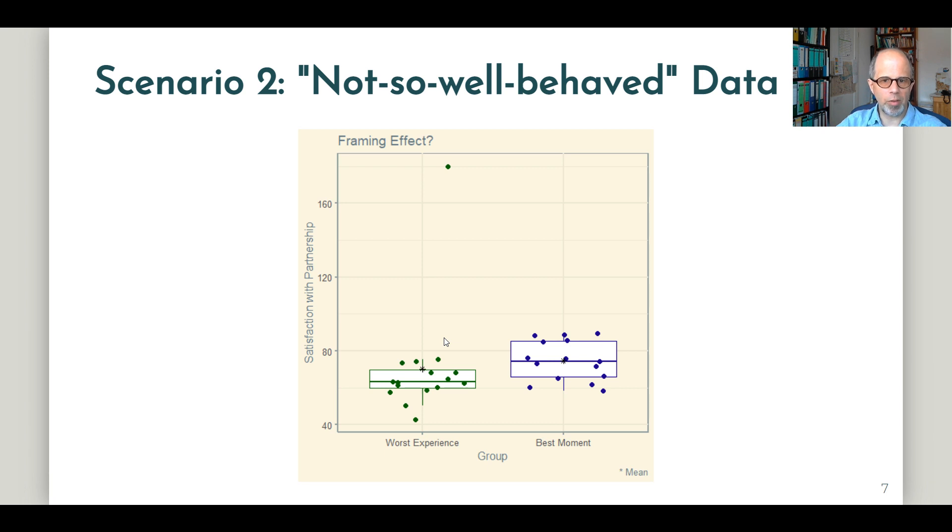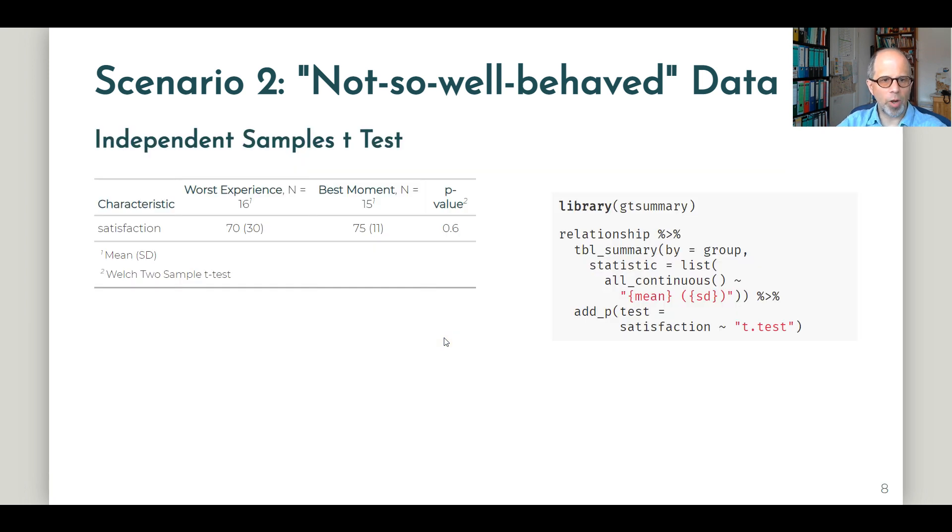Let's see what our statistical tests have to say about this. First, we run the t-test again, and we see that now the p-value is clearly not significant anymore. 0.6 is far above that usual threshold of 0.05. So here, while the mean value for the best moments group is still slightly higher than for the worst experience group, we would conclude that statistically speaking, according to the t-test, the best moments group is not statistically more satisfied with their relationship anymore than the worst experience group. So this one outlier had a strong influence, and the test is not significant anymore.